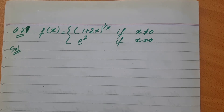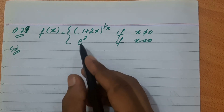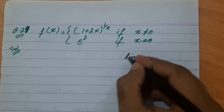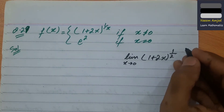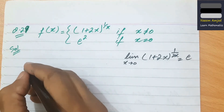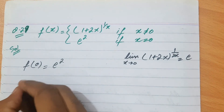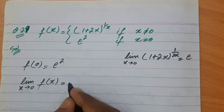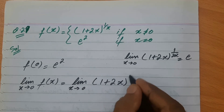अब Question 29 — बताना है x=0 पर continuous है या नहीं। यहाँ 1+2x और 1/x लिखा है। इसे standard form में बना दें: f(0) find करते हैं: if x=0, function = e²। अब limit: limit x→0 f(x) = limit x→0 (1+2x)^(1/x)।